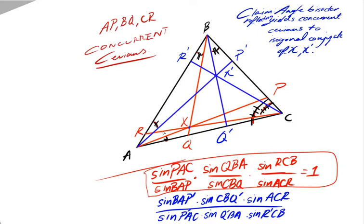divided by BAP, this big angle, sort of the complement with respect to A of the first angle, times sine CBQ, this angle, times ACR, this tiny angle right here, is equal to one. And we know that by the trigonometric form of Ceva's theorem.